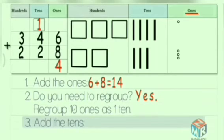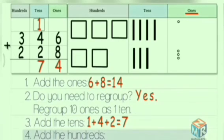Now add the tens. 1 plus 4 is 5. 5 plus 2 is 7. Now add the hundredths. 3 plus 2 is equal to 5. So sum of 346 and 228 is 574.